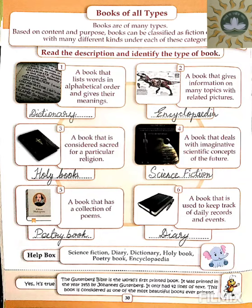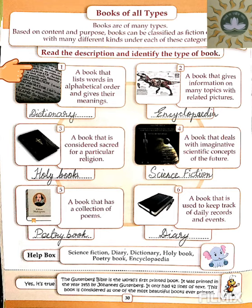Read the description and identify the type of book. Number one: a book that lists words in alphabetical order and gives their meaning — where words are written in A, B, C, D order and their meanings are given. This type of book is called a dictionary. D-I-C-T-I-O-N-A-R-Y. Dictionary.